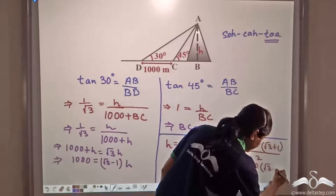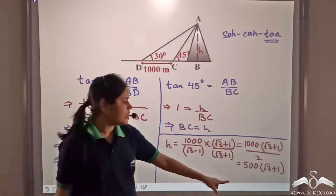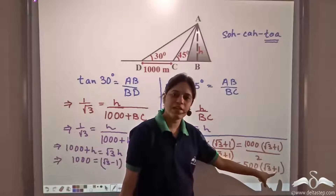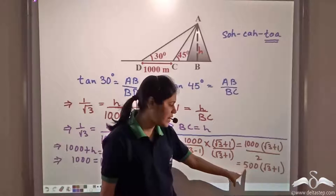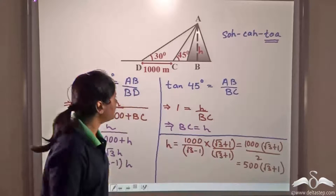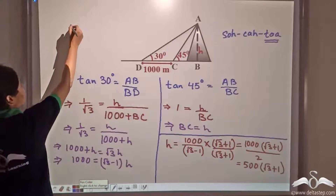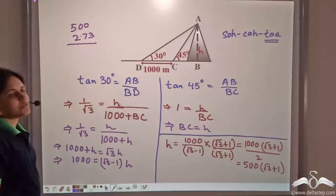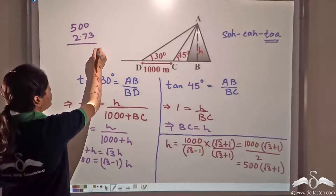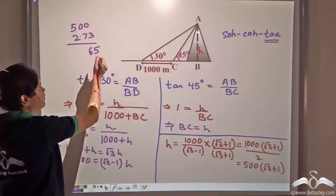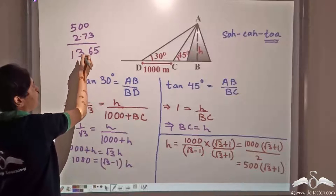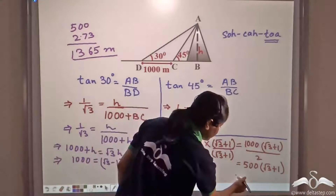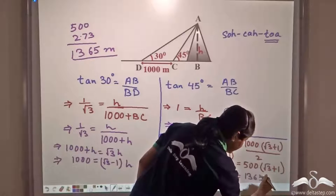We know root three is one point seven three. One point seven three plus one is two point seven three. So this is five hundred times two point seven three, which equals one thousand three hundred and sixty-five meters.